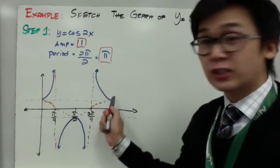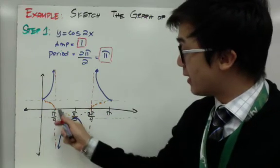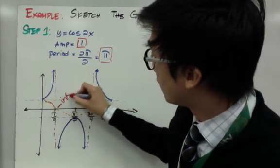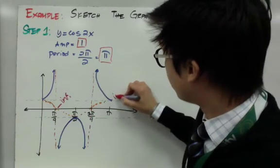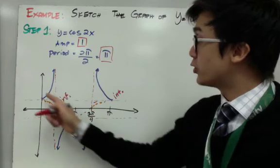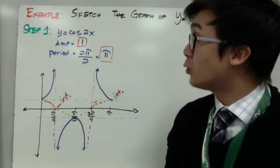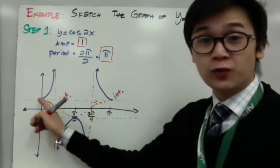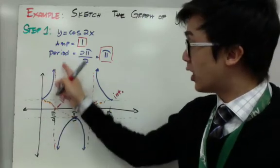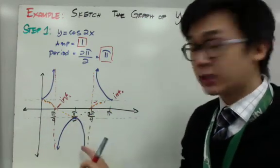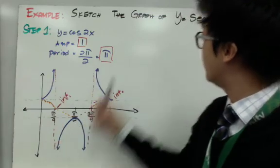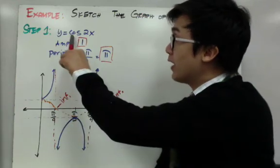Now that you have graphed your cosine, you need to find the x-intercepts of your cosine function. The intercepts lie at pi over 4 and 3 pi over 4. Then you draw your vertical asymptotes to construct the graph of the secant function. Just like the cosecant function, the secant function starts from the tip of the maximum and minimum points of your cosine graph. So the parabola opens from the maximum point, and another opens upward from the minimum point. This is the graph of y equals secant 2x, based on its inverse, the cosine function.